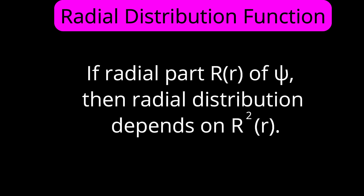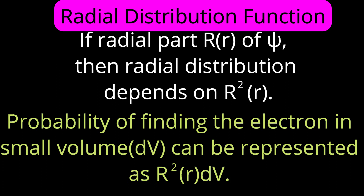The wave function has two parts: the radial part and the angular part. The radial part is represented as capital R in brackets of small r. This radial part gives information about the first two quantum numbers, n and l. If we take R squared in brackets of r, we can find the probability of finding the electron in a small volume dv. So the probability is R squared(r) times dv.